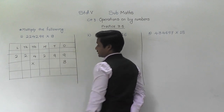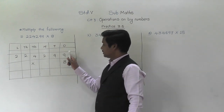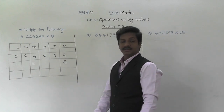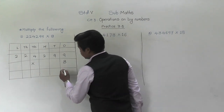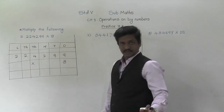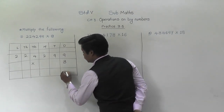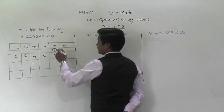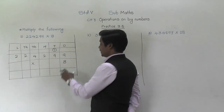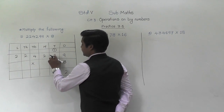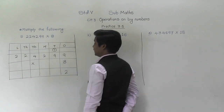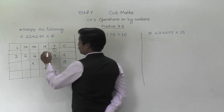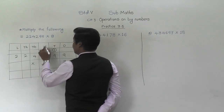First, we will multiply the digit at the ones place, that is 9. 8 nines are 72. 2 will come down, 7 will be carried to the tens place. Again, 8 nines are 72. 72 plus 7 is 79. Again 9 will come down, 7 will be carried to the hundreds place.